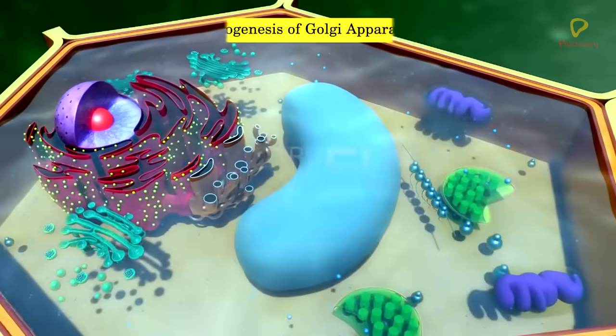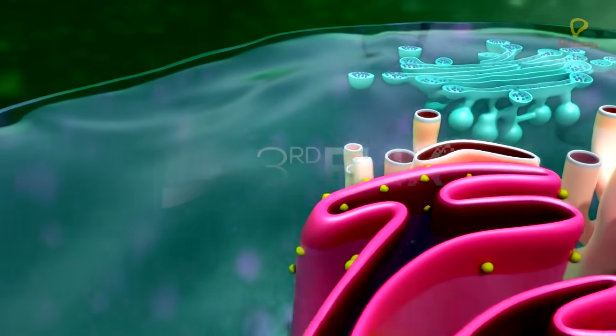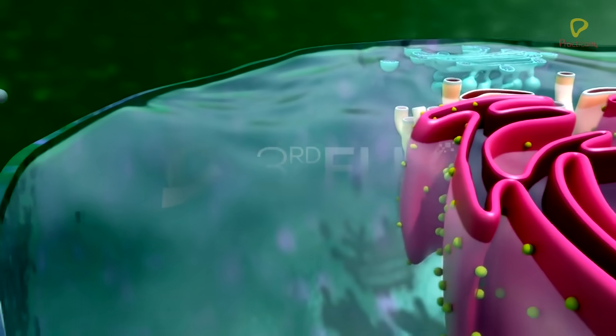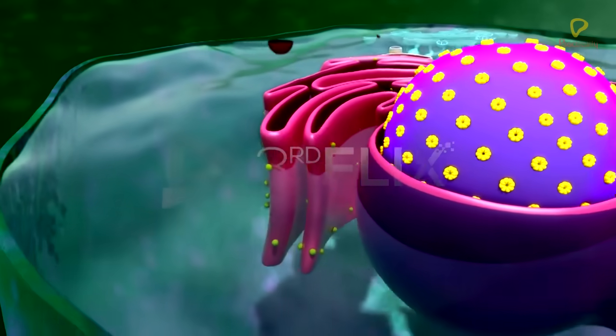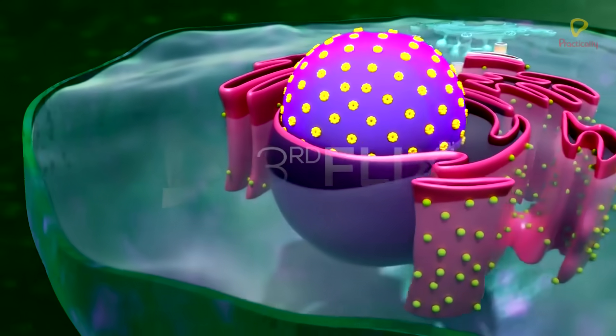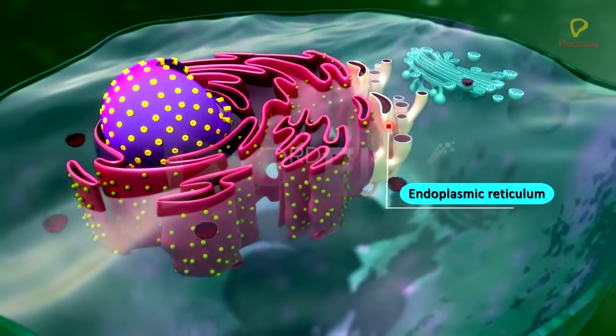Biogenesis of Golgi apparatus: Golgi apparatus develops from invaginations of plasma membrane. Sometimes it develops from evagination of nuclear membrane or from endoplasmic reticulum.